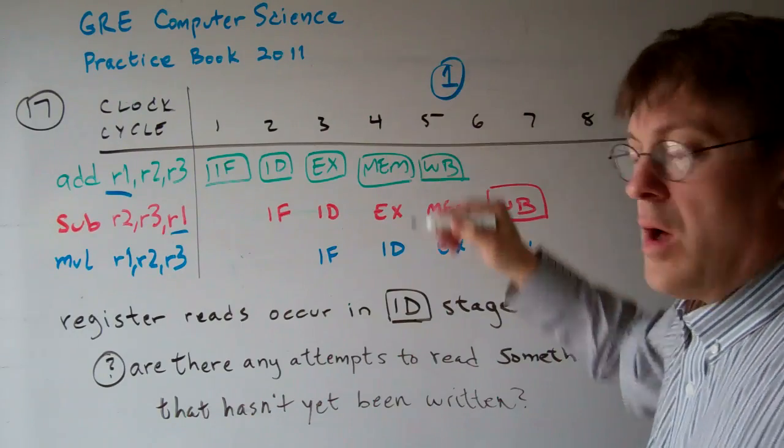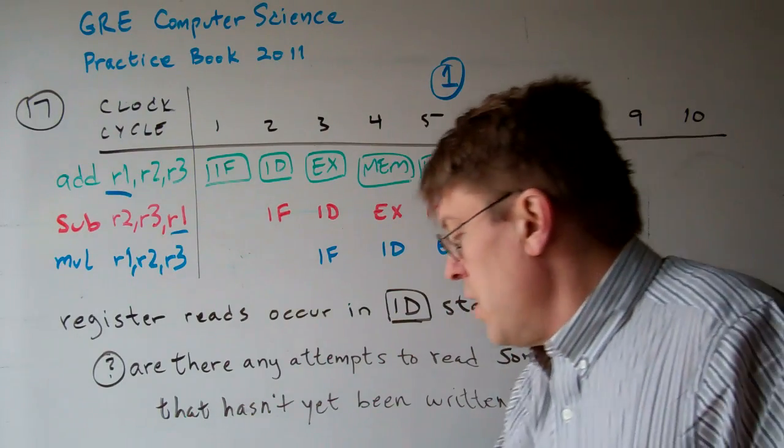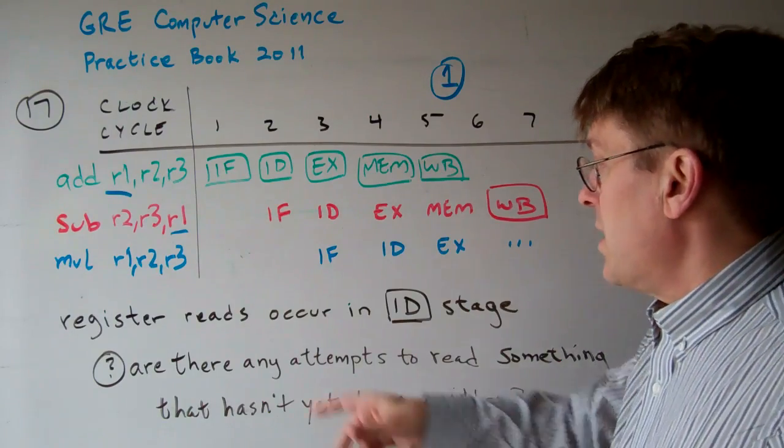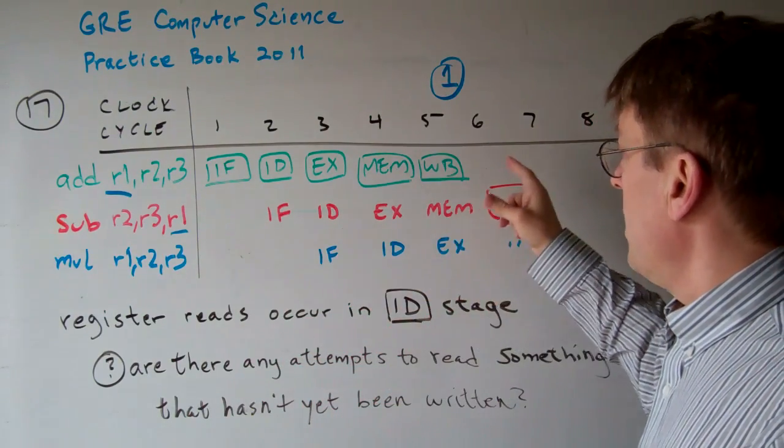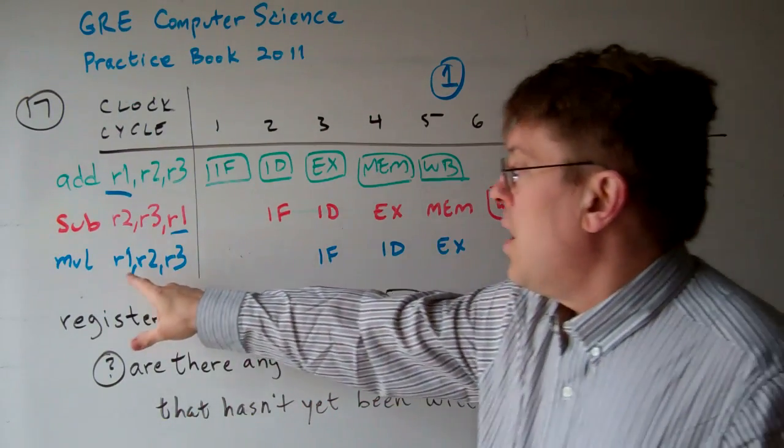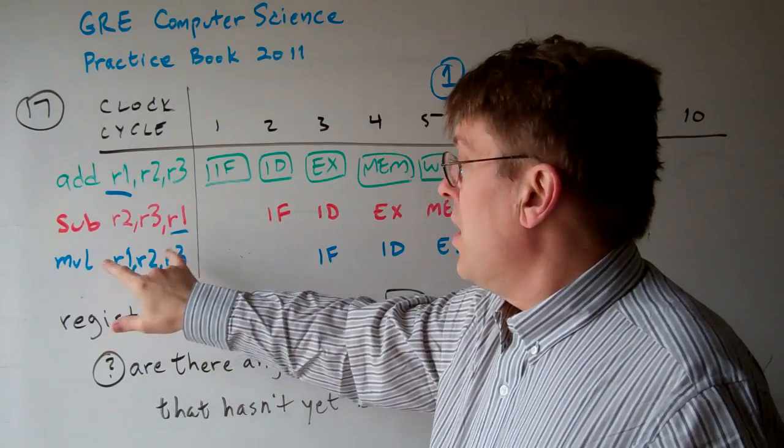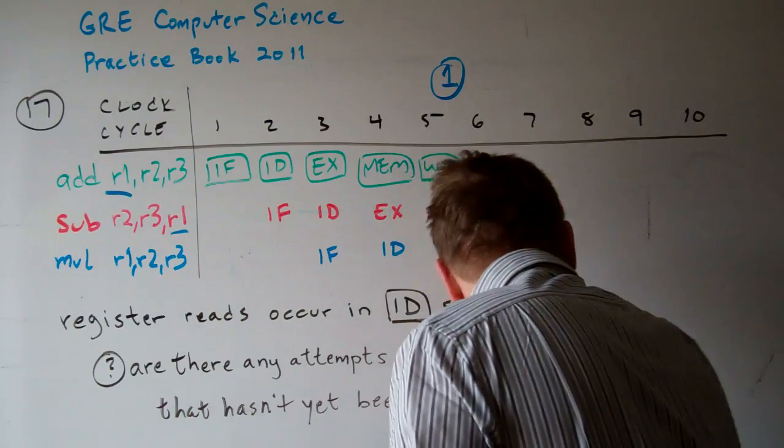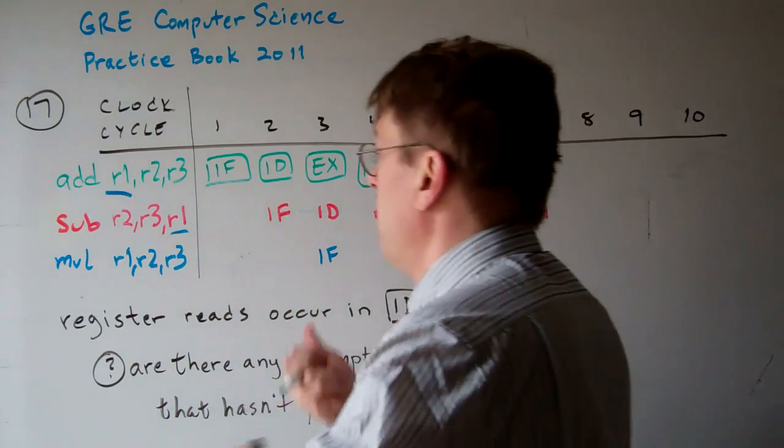Now, the second one is here. R1 is being written, and it's using R2 and R3, but R2 has not yet, perhaps, been written.